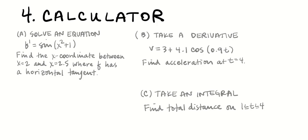In a calculator-active scenario, we need to solve an equation, take a derivative, take an integral, and graph a function. The key rule: describe the equation you're solving before going to the calculator — don't jump straight to the x values. For example, to find the x-coordinate between x equals 2 and x equals 2.5 where f has a horizontal tangent, we set the derivative equal to 0: sine(x² + 1) equals 0. Type that into y1 in radian mode and compute the zero.